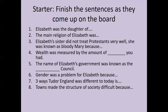Tell me what Mary did that was seen as so serious. Wealth was measured by the amount of what you had. The name of Elizabeth's government was known as the blank council. Gender was a problem for Elizabeth because... Three ways that Tudor England was different today is... And towns made the structure of society difficult because — think about last lesson and what happened to towns over time. Pause the video here and we will go through the answers shortly.